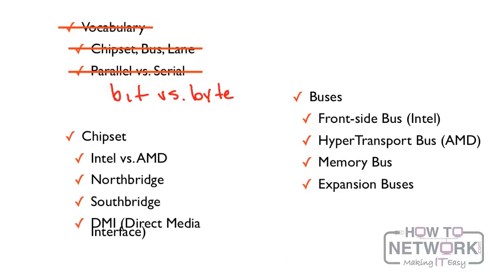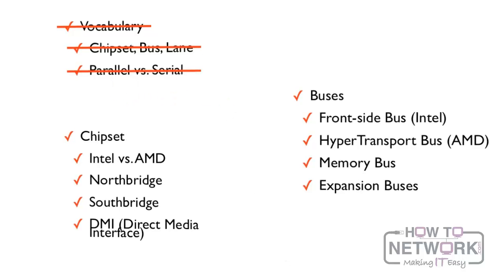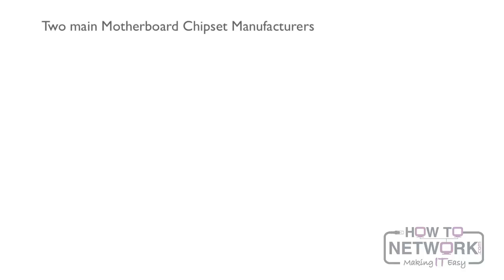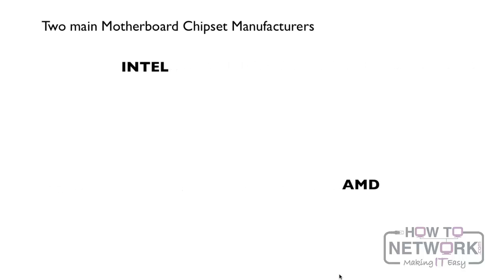Let's get into chipsets. There are two main chipset manufacturers when it comes to motherboards, and these are the same names you're going to see with central processing units or CPUs: Intel and AMD.